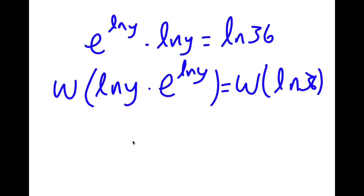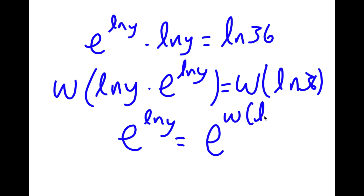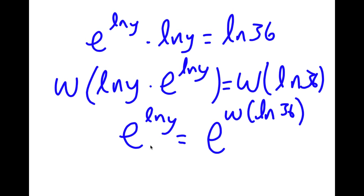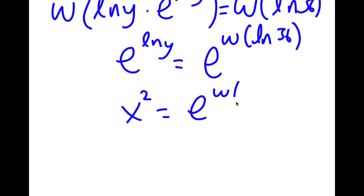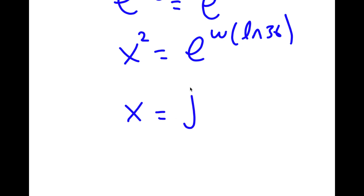This results in e to the power of ln y equaling e to the power of W of ln 36. Remembering that y equals x squared, I have x squared equals e to the power of W of ln 36. Taking the square root on both sides, x equals plus or minus the square root of e to the power of W of ln 36.